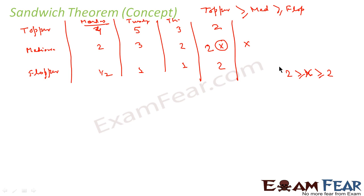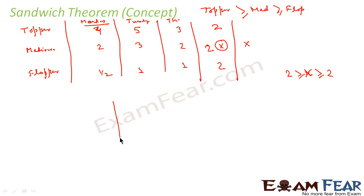Similar to this, we develop the sandwich theorem, where we have three functions: function one, function two, and function three. We say that function one's value is always greater than or equal to function two's value, and function two's value is always greater than or equal to function three's value. On a particular date, if the topper and flopper watch an equal number of hours, then the mediocre also watched the same number of hours. You can do a graphical representation too.